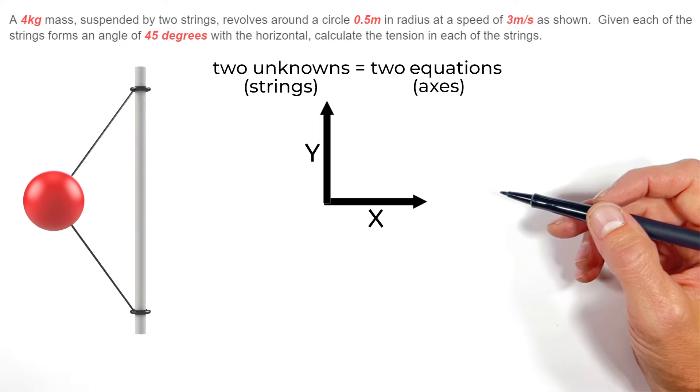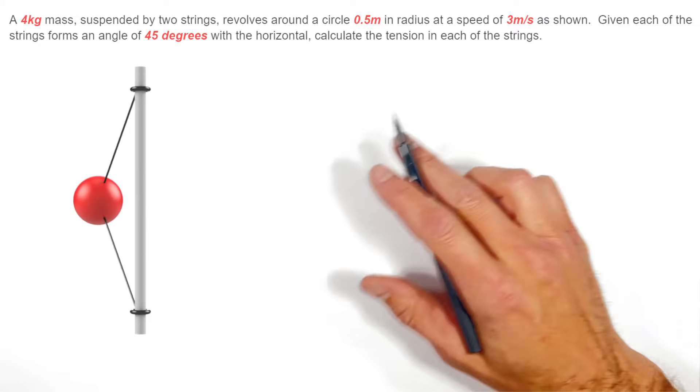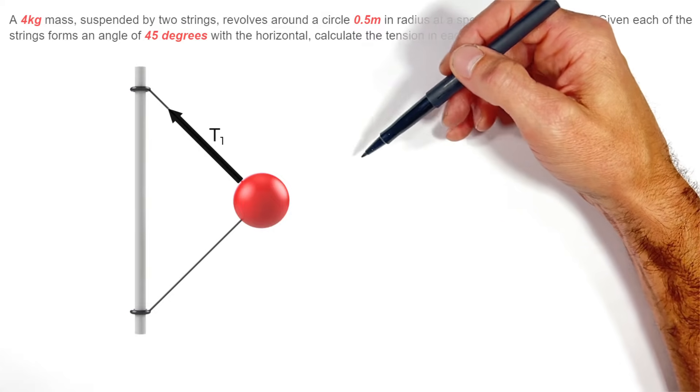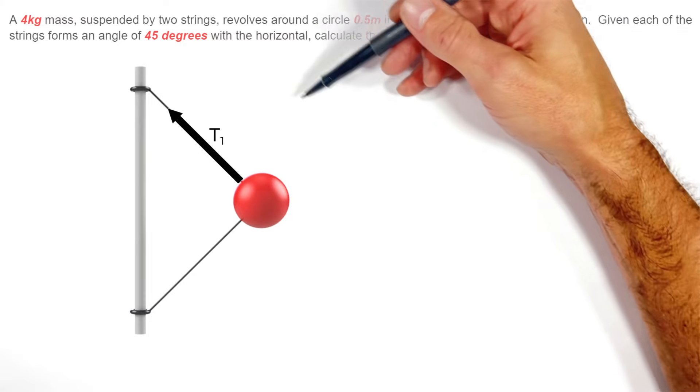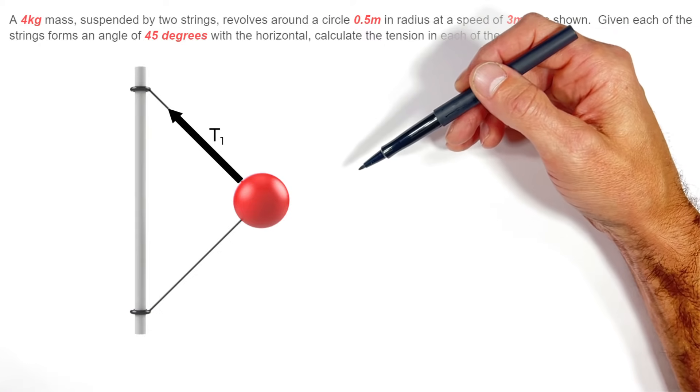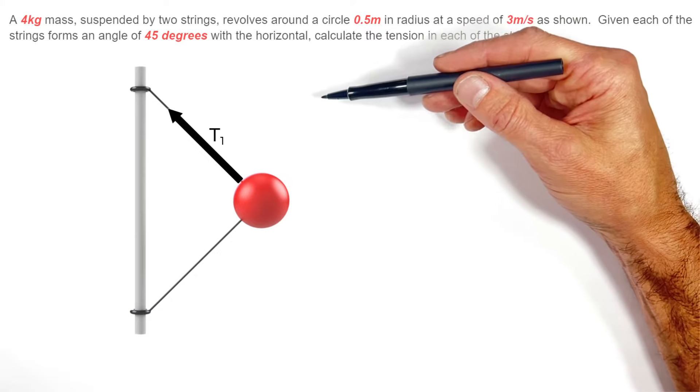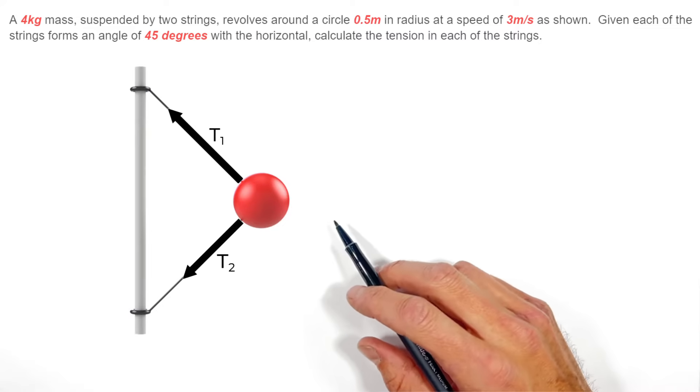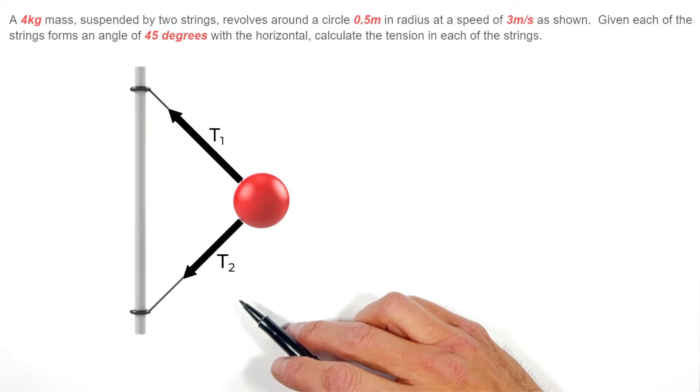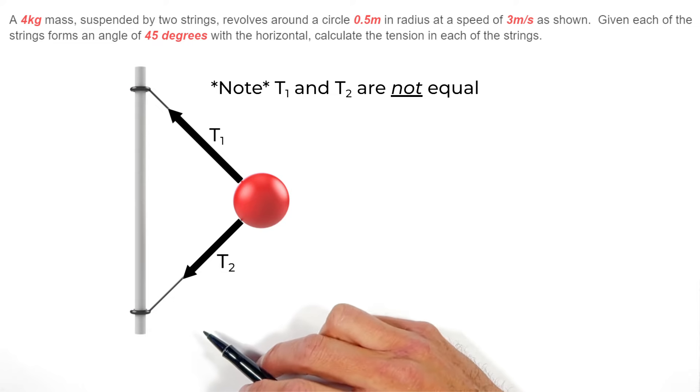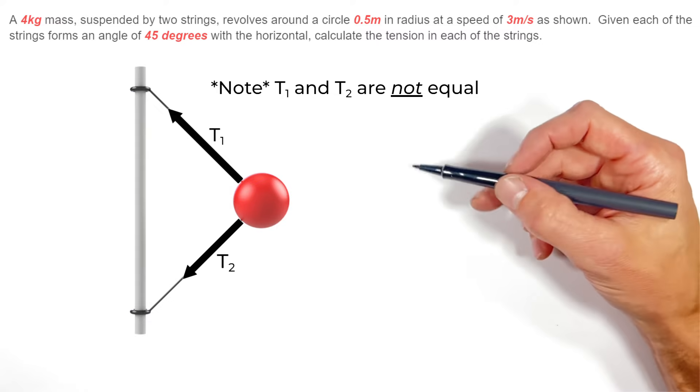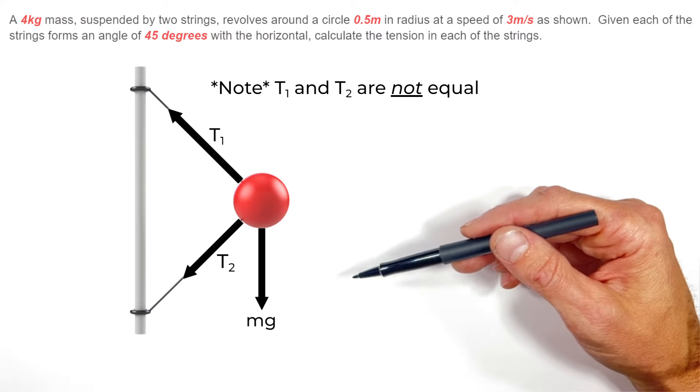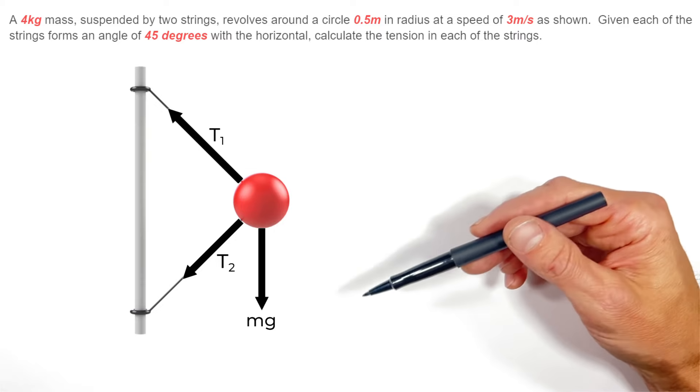Now in order to do that I want to take a look at the free body diagram of the ball as it's rotating around this rod. You see this first string, we'll call this string one, is pulling on this ball up and to the left. We also have string two acting down and to the left, and then gravity acting straight down on the ball. So just say that force is the weight of the ball or mg.